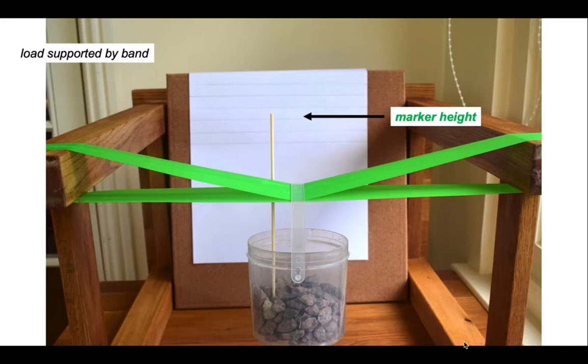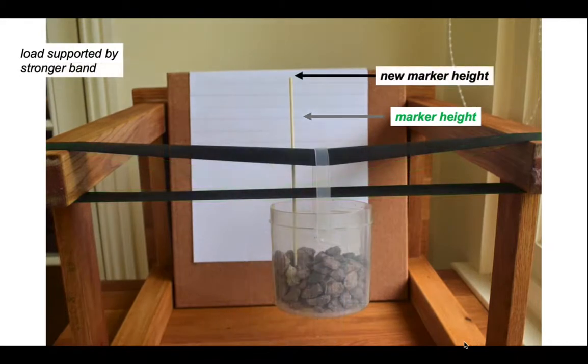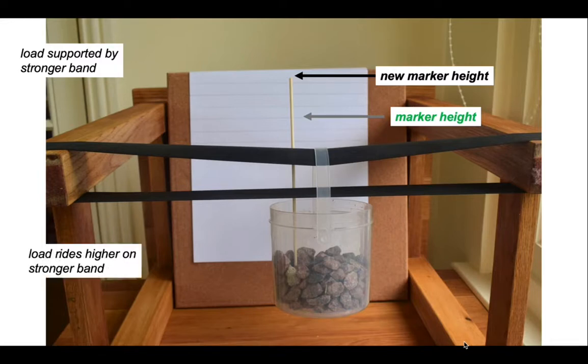Now let's just change the strength of our elastic band. So we'll replace our green elastic band with a stronger black one. And now this stronger band has not subsided as much. The load is supported by the stronger band. And because the load has not subsided so much, the top of our marker has not gone down as far either. So our new marker height is higher than our old one. So the height of the load depends on the strength of the lithosphere that is supporting it. A load rides higher on a stronger band. A mountain belt will ride higher on a stronger lithosphere.